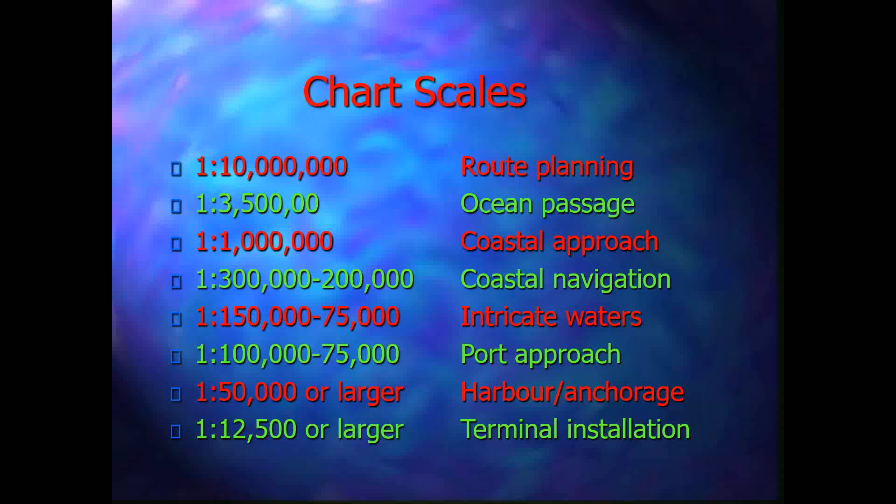These are examples of different chart scales used in navigation. You can see coastal approach charts and coastal navigation: the scale becomes larger as you are in coastal waters, and becomes smaller when in open ocean seas, because smaller scale charts cover larger ocean areas, although they do not focus on intricate navigational features.